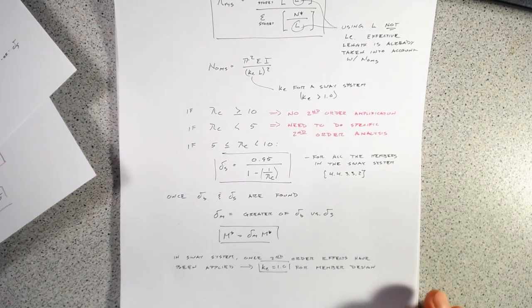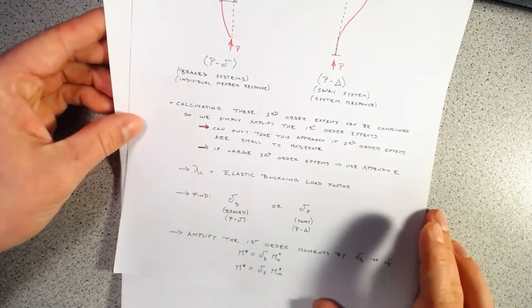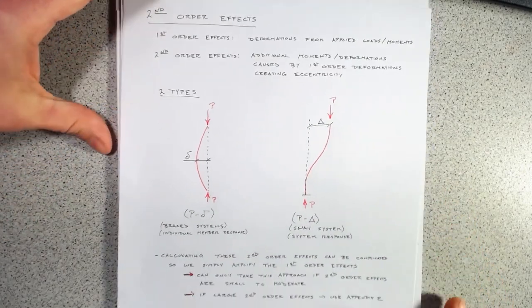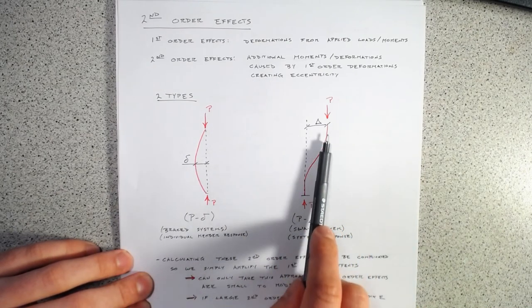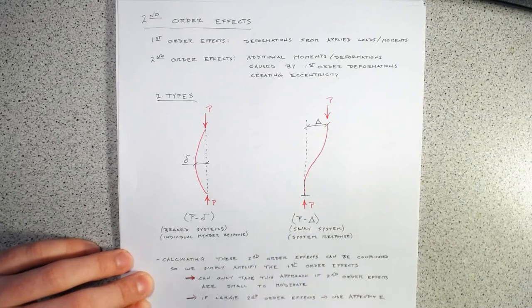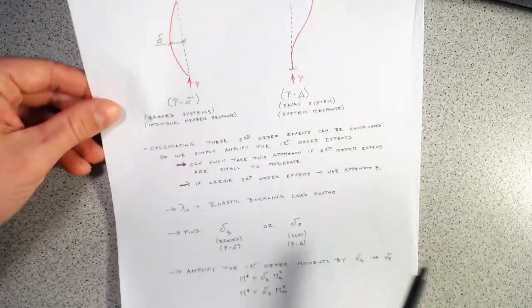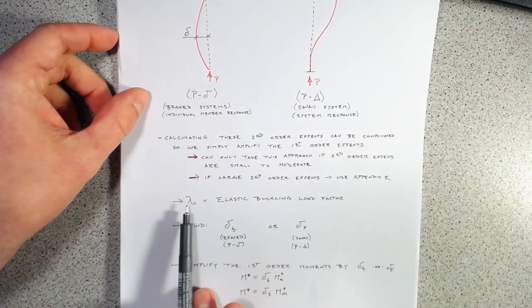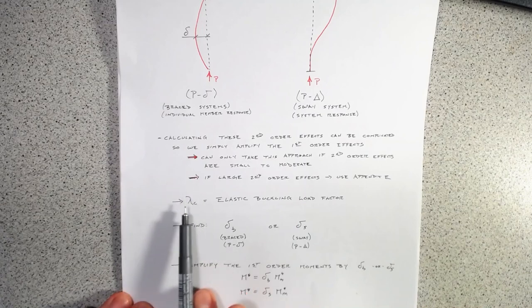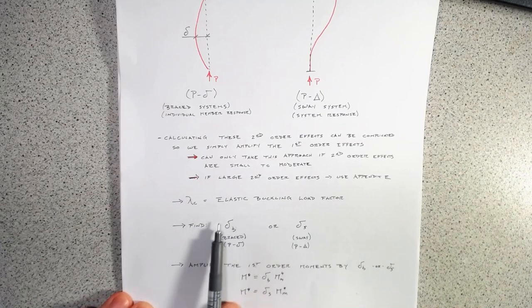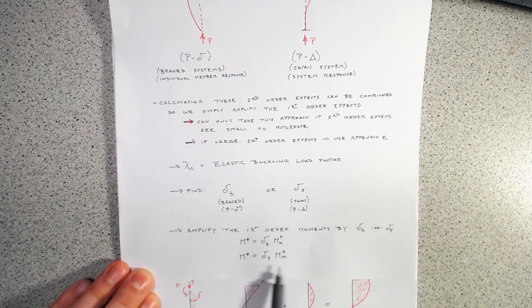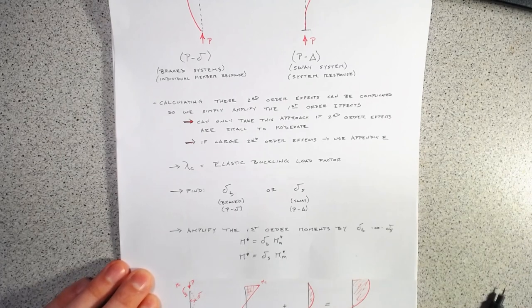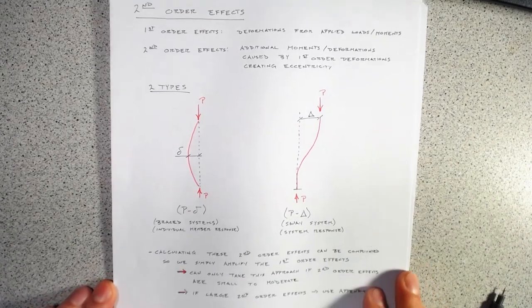To wrap up: second-order effects are extra moments and deformations caused by a line of action outside where the applied load is relative to first-order moments. To find them, we determine how close we are to the critical buckling load using lambda_c, then determine either delta_b or delta_s as our amplification factors, and then amplify our first-order moments by these factors to design the section. Thanks for watching.